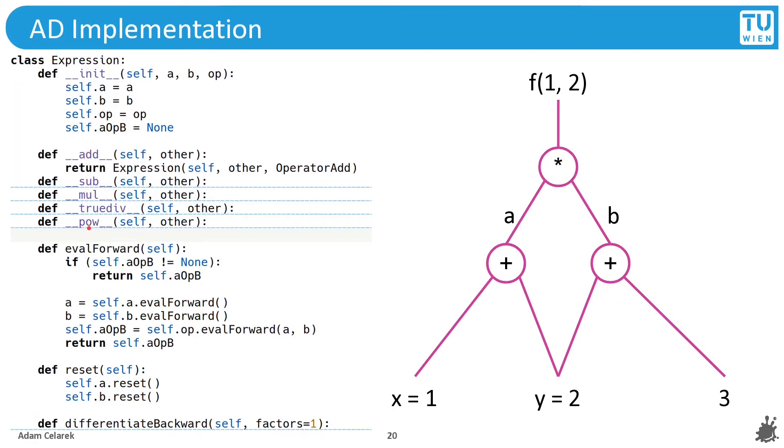This is the expression. It is basically a node in this tree. We have the two children a and b, we store the operation, and we store the results. This is the caching. It is built using operator overloading of Python, which simply calls the constructor. Evaluation forward first checks whether something is in the cache. If not, then it evaluates the left and right children and it stores the result in the cache. By recursion, we first compute the bottom part of the tree and then we walk up.